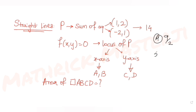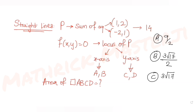The answer choices are: (A) 9/2, (B) 3√17/2, (C) 3√17/4, and (D) 9. We need to figure out which is the correct answer for the area of quadrilateral ABCD. Let's see how to solve this type of question dealing with the ideas of straight lines.